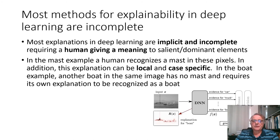This example illustrates the idea of deep learning visual explanations again. It also illustrates the idea that most explanations in deep learning are implicit and incomplete, requiring a human giving meaning to salient dominant elements. Here you see the boat and how you recognize that this is a boat, because it has a mast. But on the same picture, there is another boat without mast, so you need to use some other features to recognize that it's a boat. So, explanations in this case need to be local and case-specific.